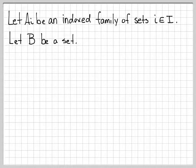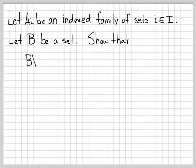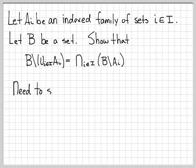In this problem we're going to work with an indexed family of sets. A_i is an indexed family of sets where all the indices, the little i, come from the set capital I. B is another set. We are going to show that B differenced with the union of all A_i is equal to the intersection over all indices i of B difference A_i. So we're going to show that these two sets are equal.